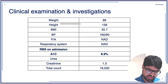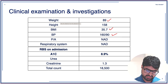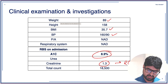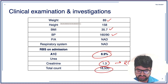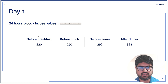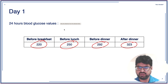Looking at the patient's clinical scenario: weight is 89 kg, BMI is 35, blood pressure is not controlled, respiratory system is fine. HbA1c is 8.9%, creatinine is 1.3, and eGFR will be somewhere in the 50s. The patient has infection with a high CRP and raised total count. On day one of admission, fasting blood glucose was 220, pre-lunch 250, pre-dinner 292, and post-dinner 323.